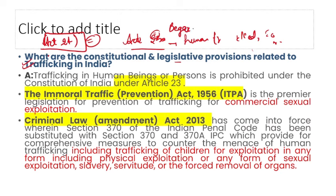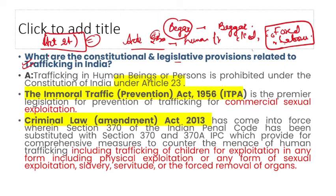BEGAR has a single G and means forced labor. Beggar has double G and is a different word. BEGAR historically referred to bonded labor (Bandhua Mazdoor) — landlords forcing tenants to work on their land without pay. The next topic we will study is Beggary, which has double G.